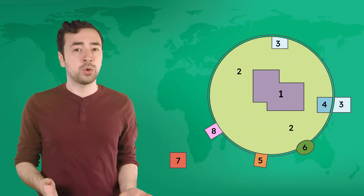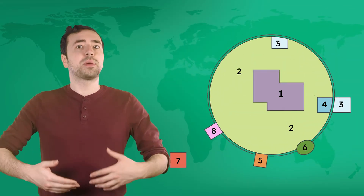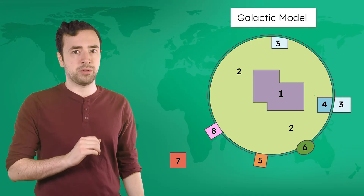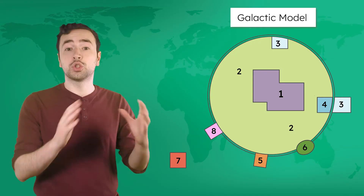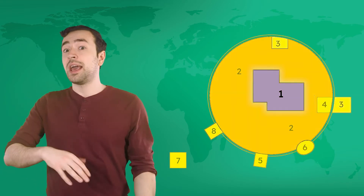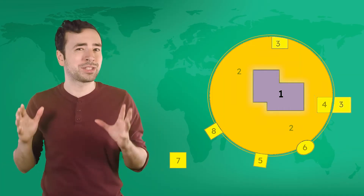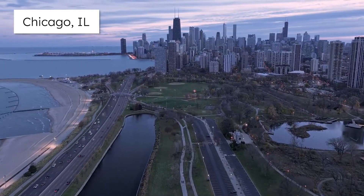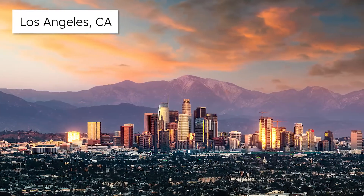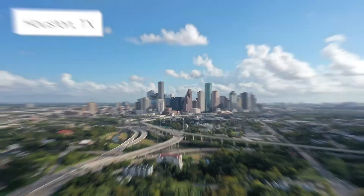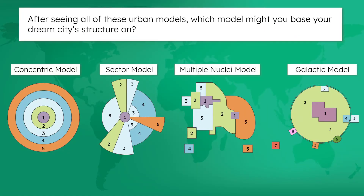The rise of edge cities in Chicago led urban geographers to develop yet another model that best explains the city's modern-day structure: the Galactic Model. The name compares the city to a solar system — if the city's center is the sun, then edge cities and their CBDs are like the independent planets around it. Today, most major U.S. cities look like the Galactic Model, though as we'll see in the next lesson, this structure has its own set of social and environmental issues. So after seeing all of these urban models, which model might you base your dream city's structure on?